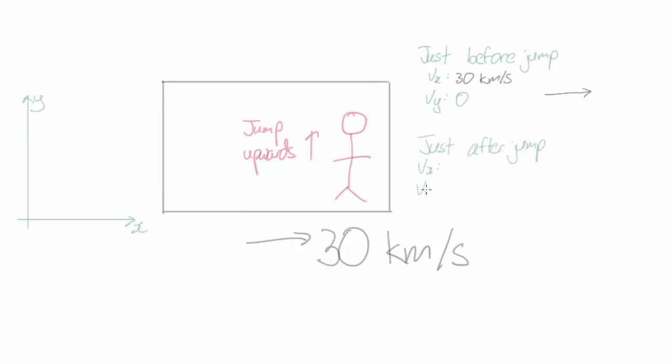Okay, what about just after the jump? So let's suppose my leg muscles are such that right after the jump I'm moving upwards at 10 meters per second. Okay, but what's my velocity in the x direction? Pause the video and see if you can guess.